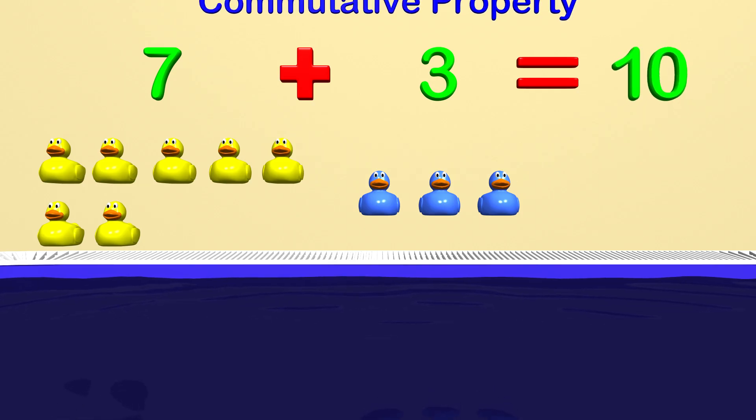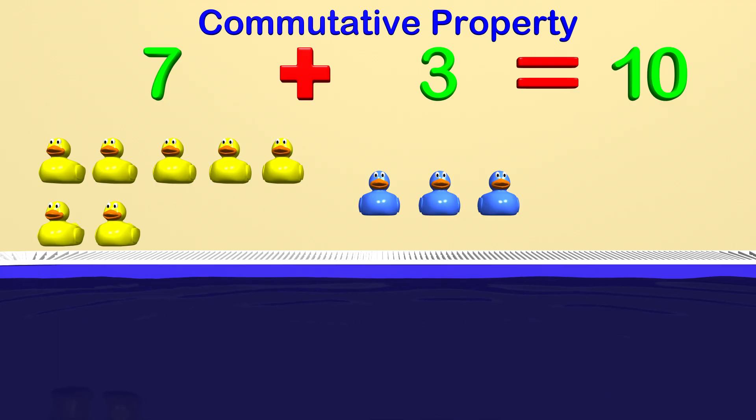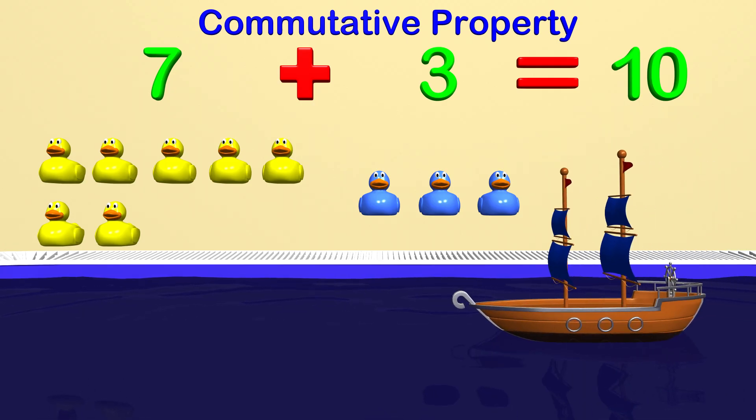In addition, we have what we call the commutative property. This seems like something difficult to understand, but it is not. All it means is that when we are adding numbers together, they can be switched around as much as you want, and the answer will still be the same. This only works for addition, so remember that.